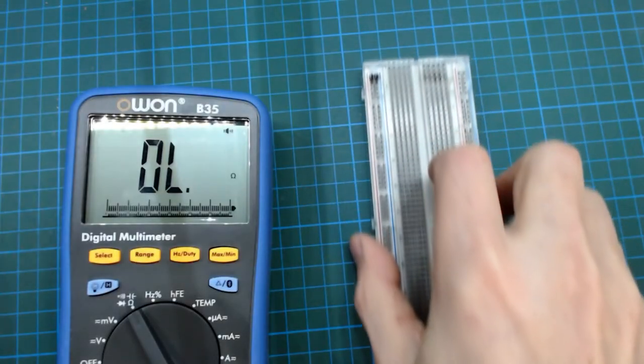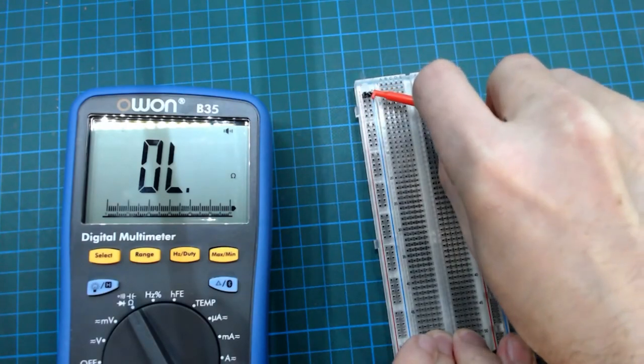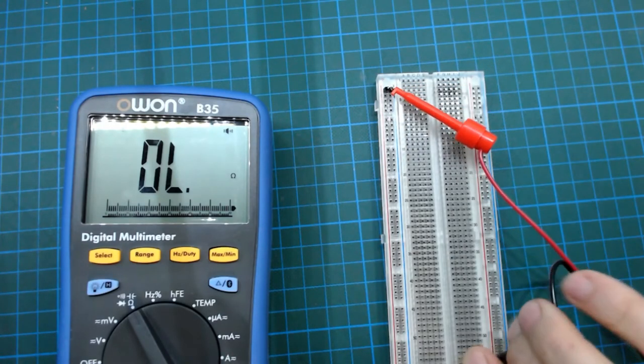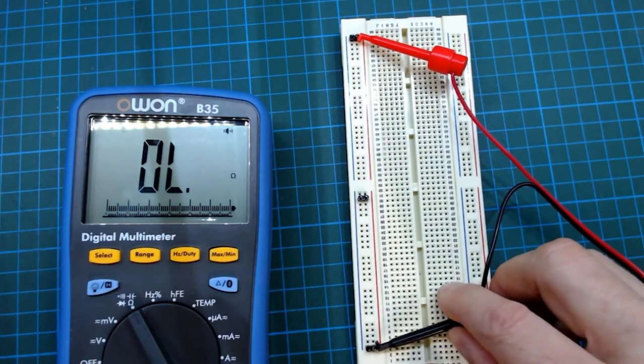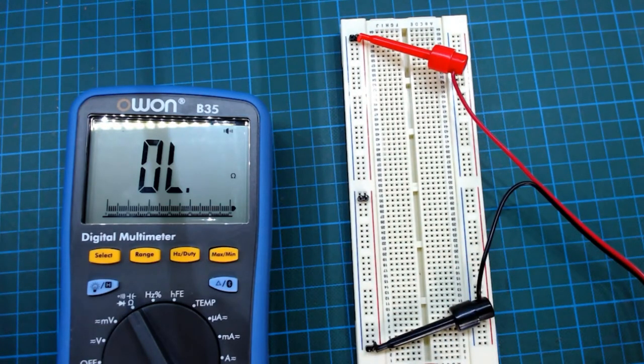But let's have a look at the power rails on this breadboard. On this one you can hear the continuity is fine end to end. But let's have a look at this one. There's no tone end to end which means that there's a break or at least very high resistance between these two points.